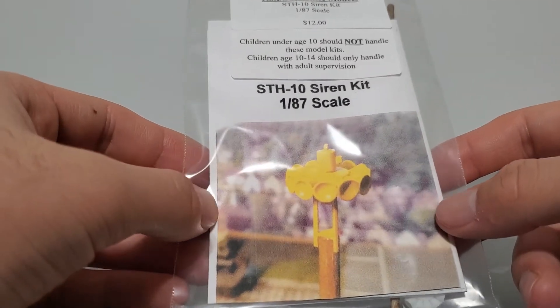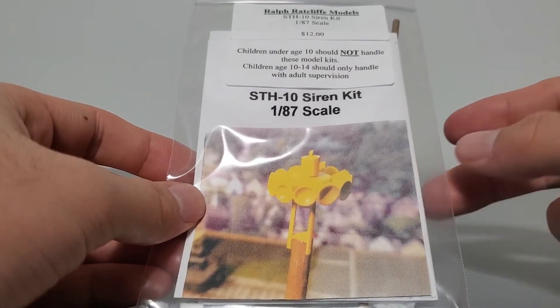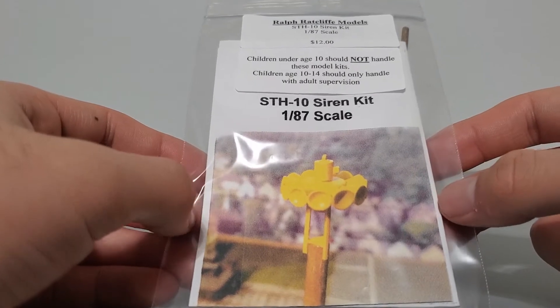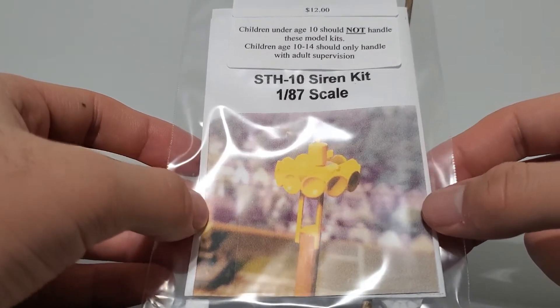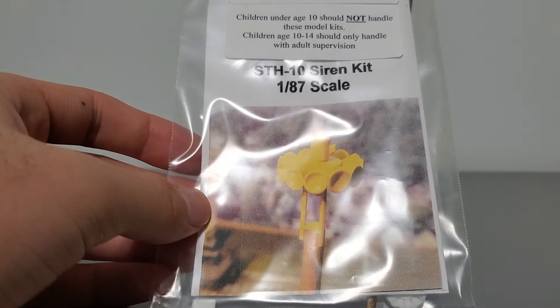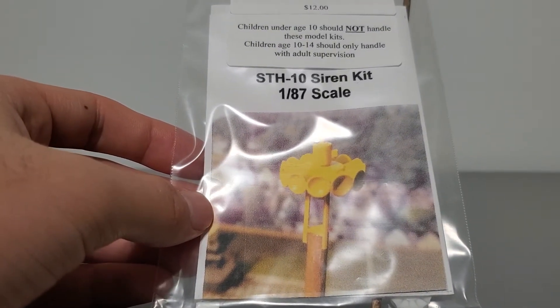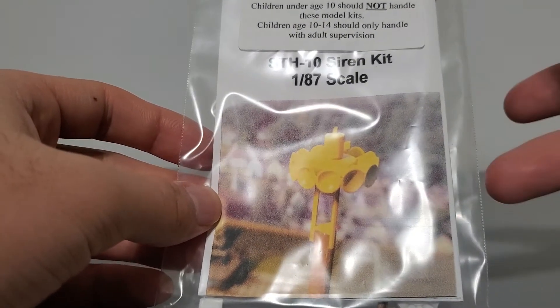I'll be opening up the Ralph Woodcliffe Models STH-10 siren kit in 1 over 87 scale, or HO scale. Since I haven't built one of these yet, this will essentially be me reacting to what I see in the kit, basically analyzing the parts and determining how the build will go.